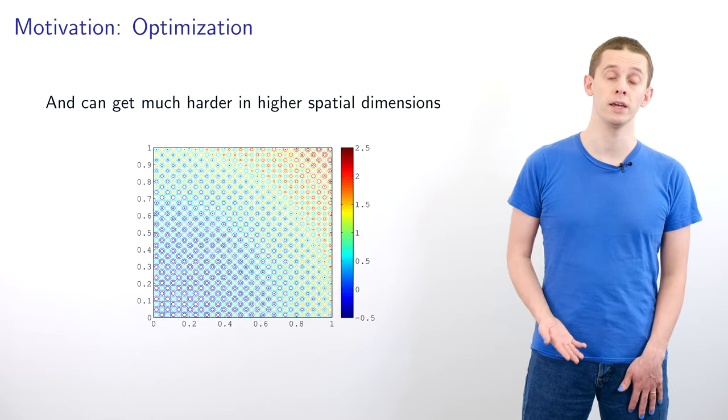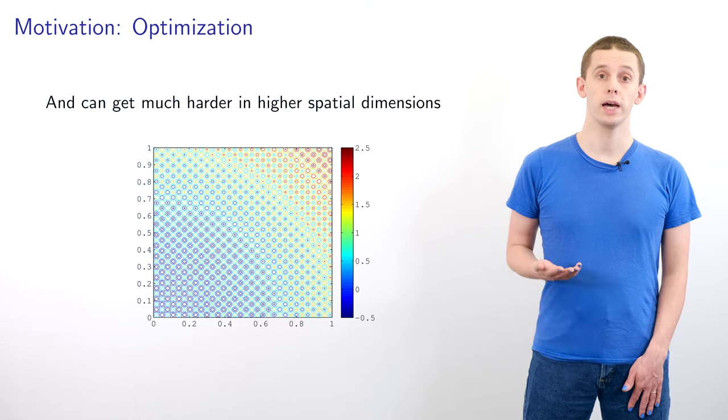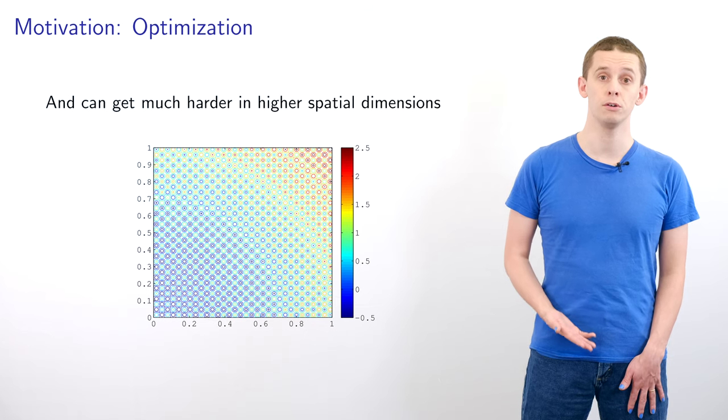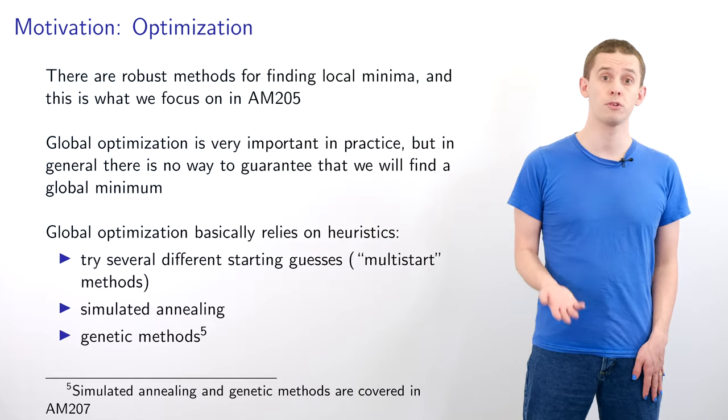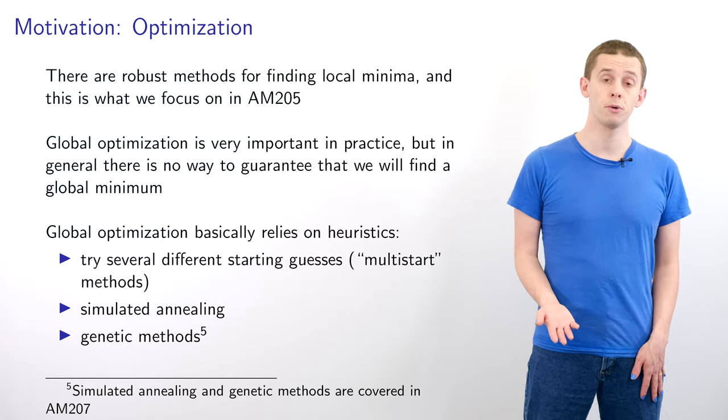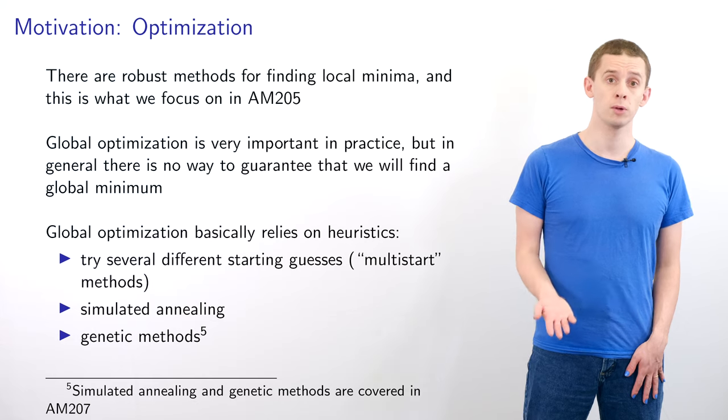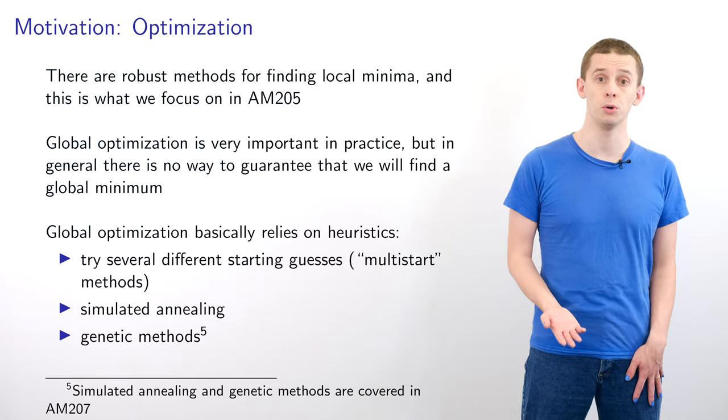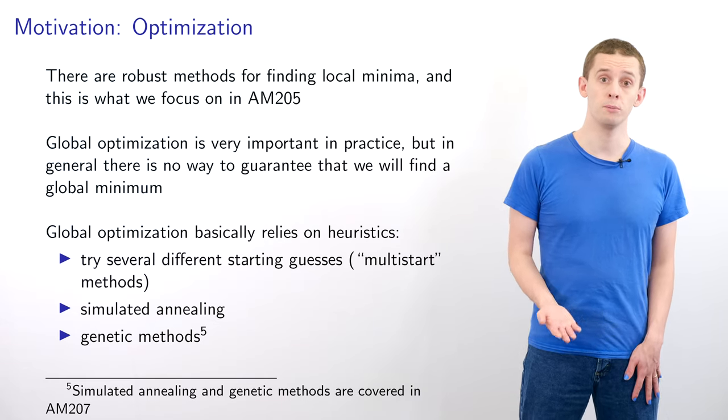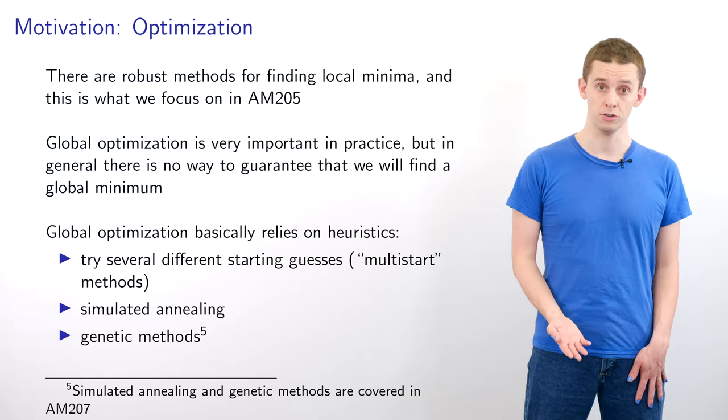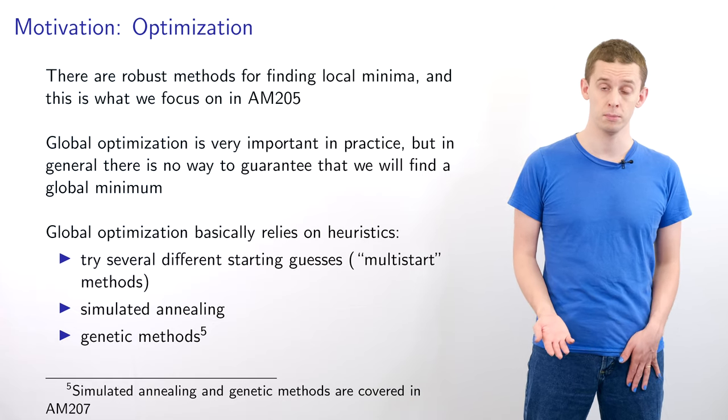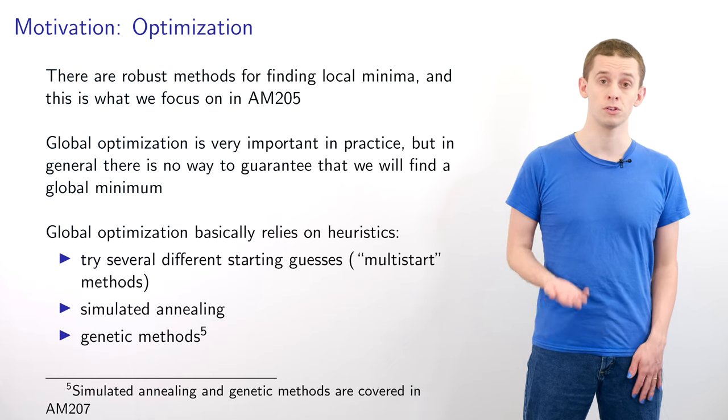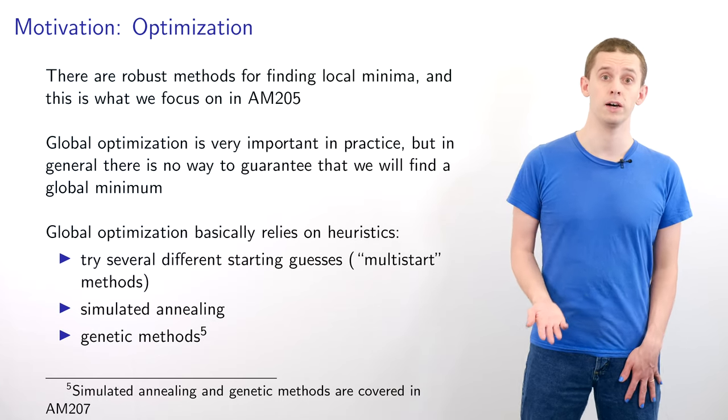And here I'm showing an example of a two-dimensional function and we're looking at contours of this function and here we could have a whole array of local minima. There are robust methods of finding local minima and these are the main focus of AM205. Of course global optimization is very important in practice but as demonstrated it can be difficult to guarantee that we've found a global minimum. Sometimes if we're able to place certain constraints on our objective function then that can allow us to ensure that we have found a global minimum.